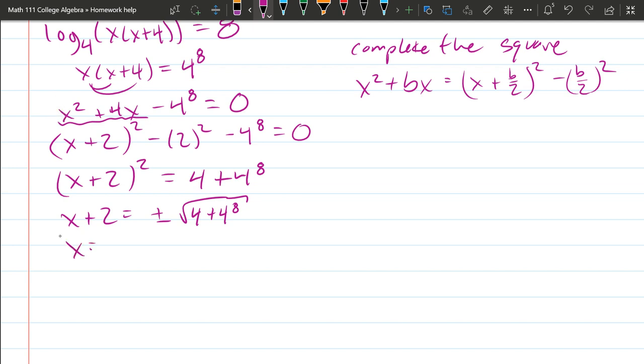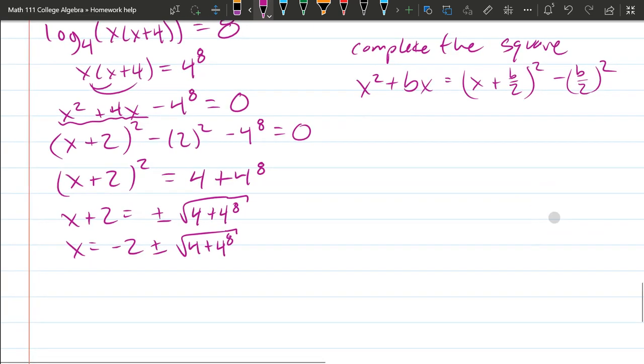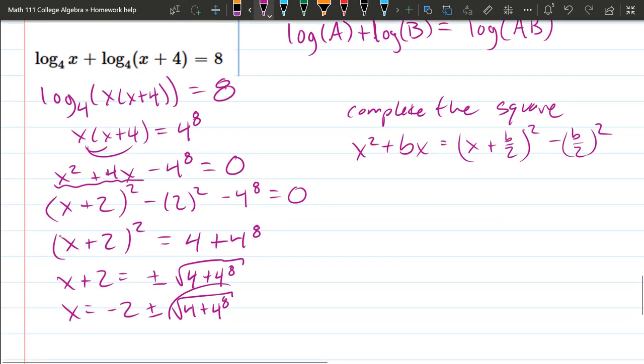Just subtract 2. Negative 2 plus or minus square root 4 plus 4 to the 8th power. There we go. So this is going to be a really big number right here. 4 to the 8th power is huge and the square root of a huge number is still big.